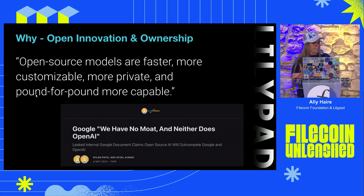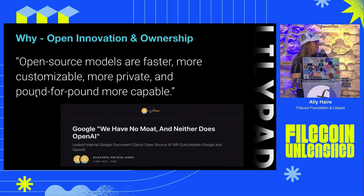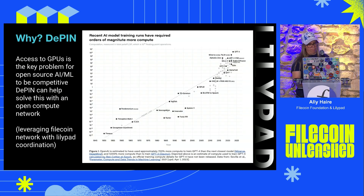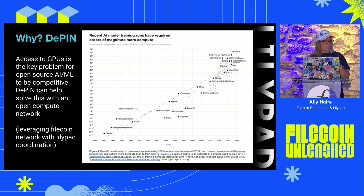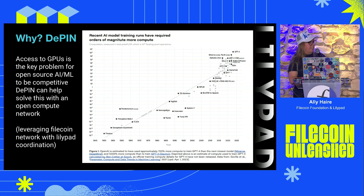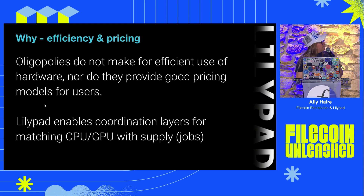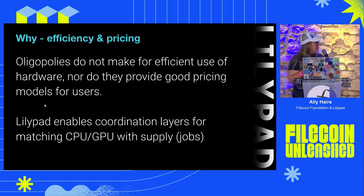According to a leaked Google article, open source AI and ML is already out-competing centralized versions, because they can define use cases and fine-tune on less data more easily. One of the main problems for open source AI is access to GPUs — a key challenge for open source AI and ML to be competitive. Decentralized physical infrastructure networks such as Filecoin can help solve this. Additionally, oligopolies don't make for efficient hardware use or good pricing models — Lilypad can enable coordination layers for matching CPU and GPU supply and demand.